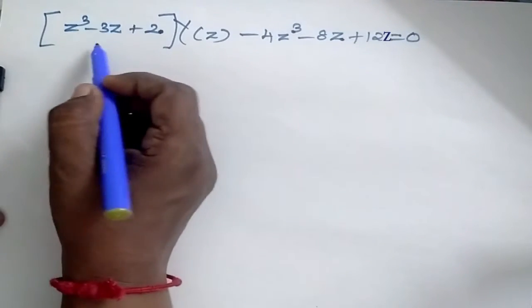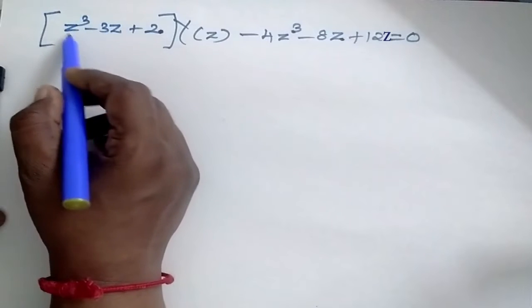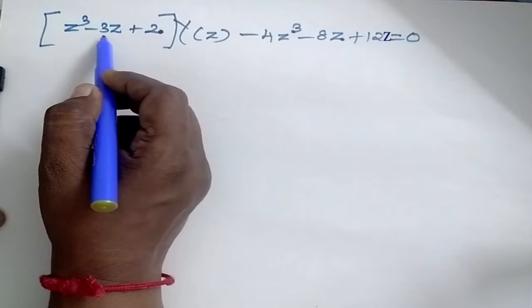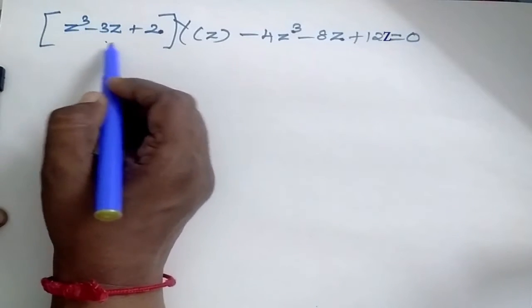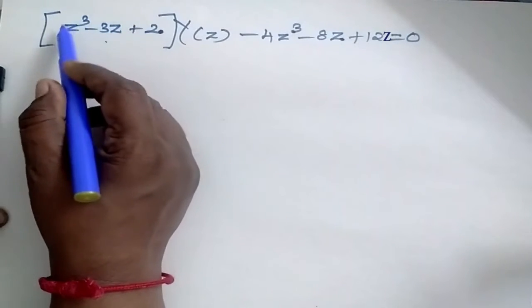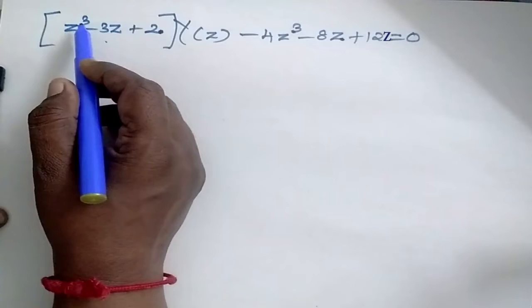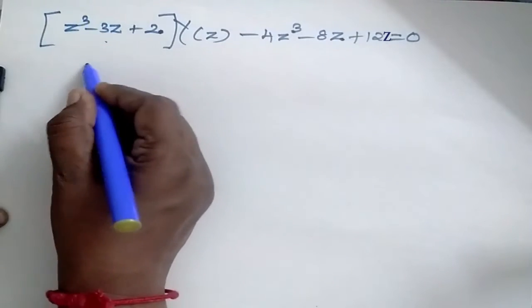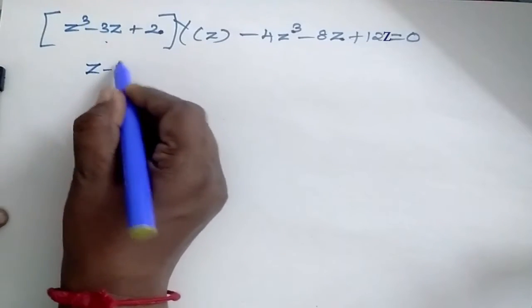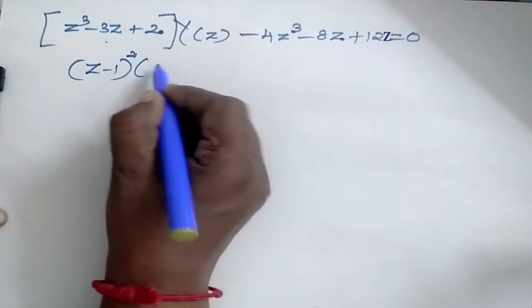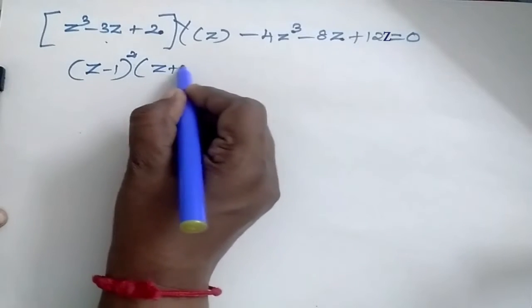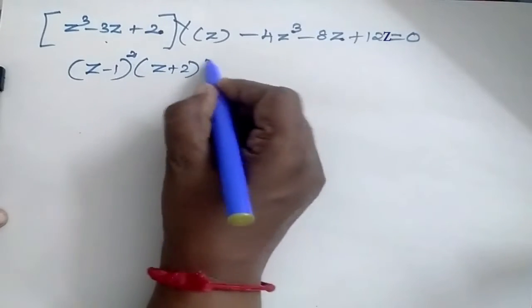Now I need to factorize this expression. I can factorize it using the synthetic division method. Factorizing gives (z minus 1) squared into (z plus 2).